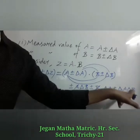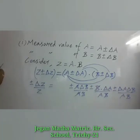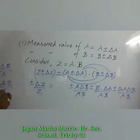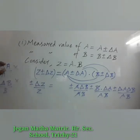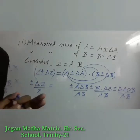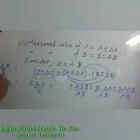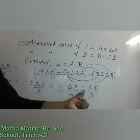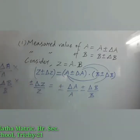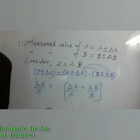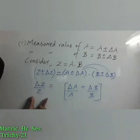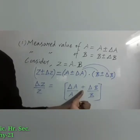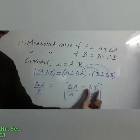The remaining term del A/A · del B/B is a very negligible value, because it is a very small number divided by a greater number. So we can eliminate that term. Taking the common ± sign outside, the new expression shows that the maximum fractional error in the product of two quantities equals the sum of fractional errors in the individual quantities: del Z/Z = del A/A + del B/B.